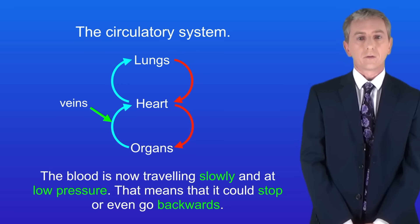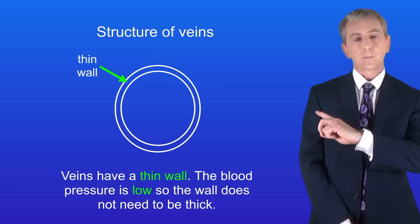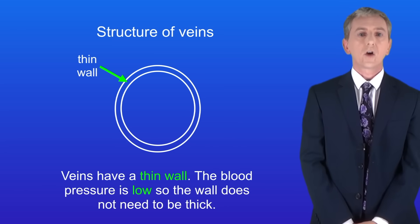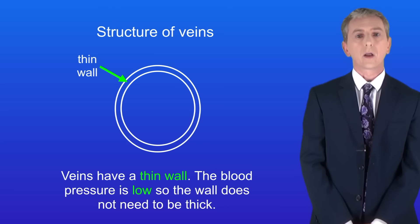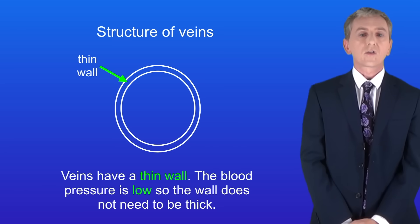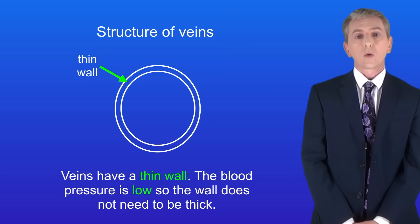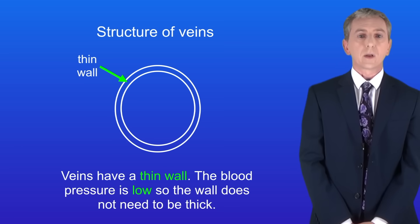I'm showing you the structure of veins here. Firstly, veins have a thin wall. That's because the blood pressure is low, so the wall does not need to be thick.